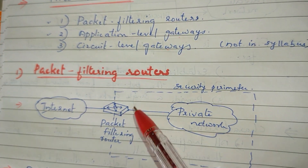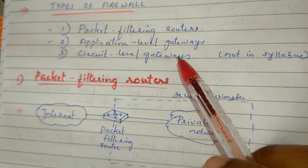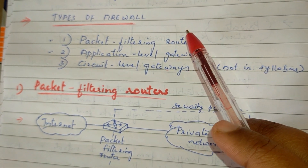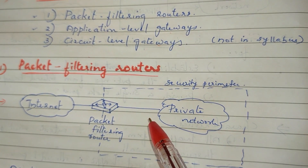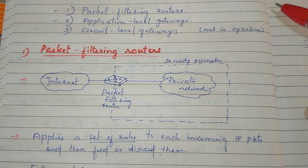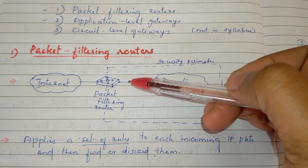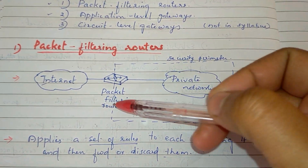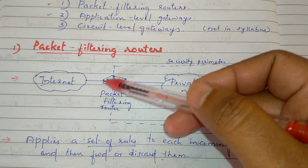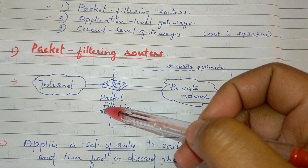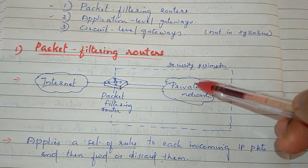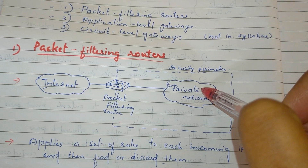Next is Packet Filtering Router. It is a type of firewall. The firewall is placed in between the Internet and the Private Network.